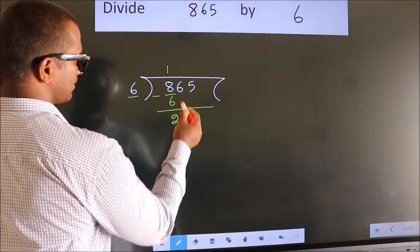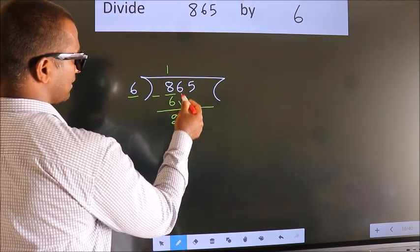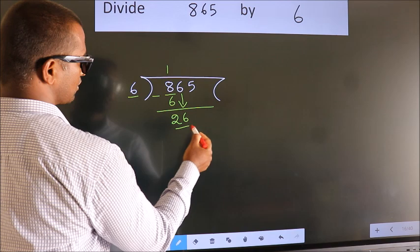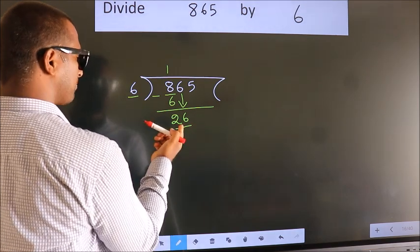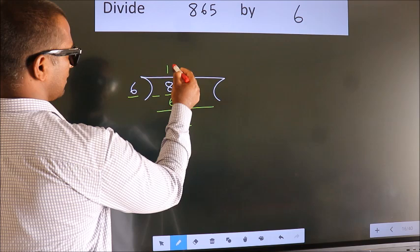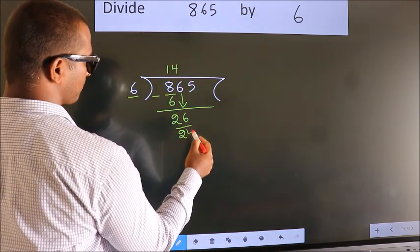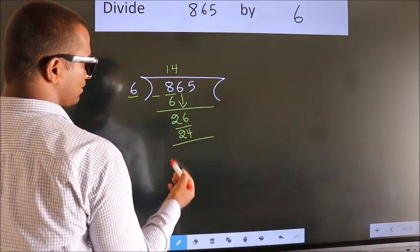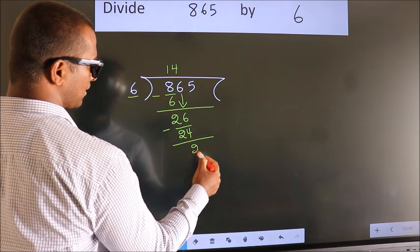After this, bring down the beside number. So, 6 down. So, 26. A number close to 26 in 6 table is 6 fours 24. Now, we subtract. We get 2.